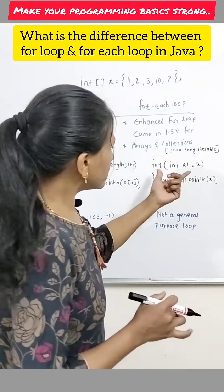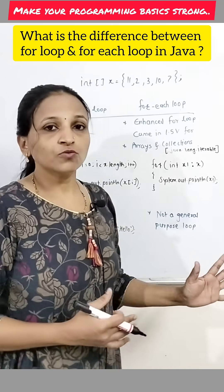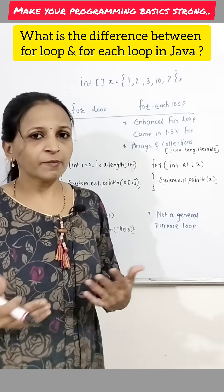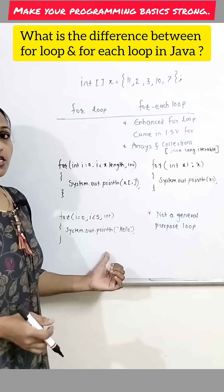The data type of X1 that is integer that should match with individual element of that array. Getting this same for each loop we can use to iterate through any collection also. It may be say at least getting. Now, see the next point is here.